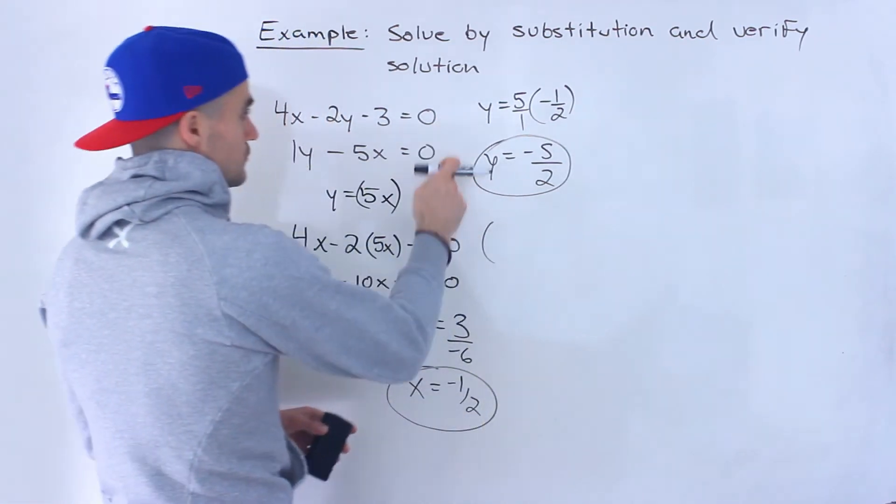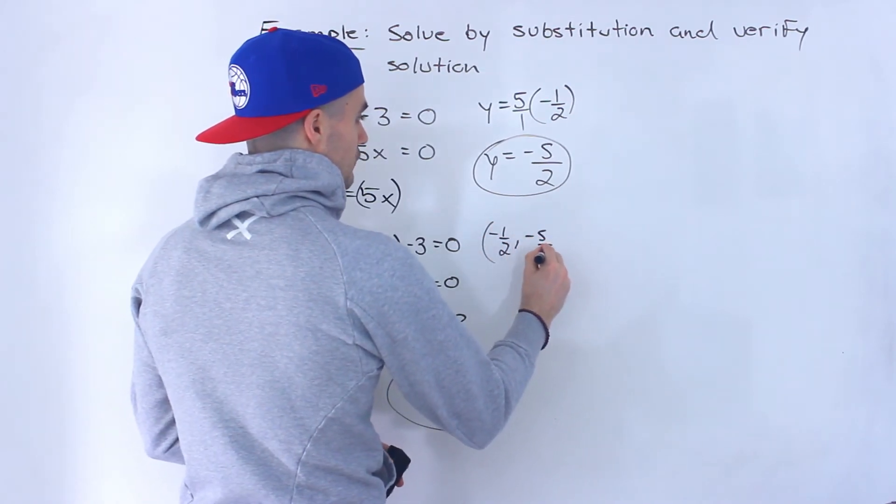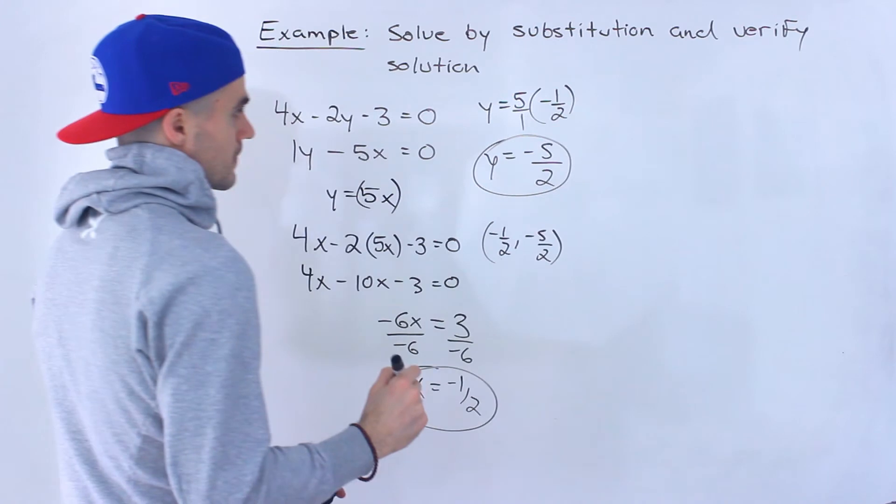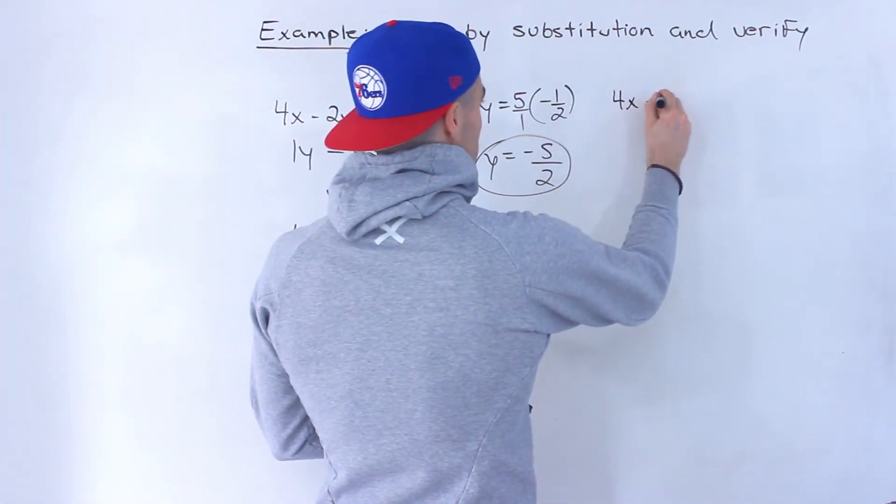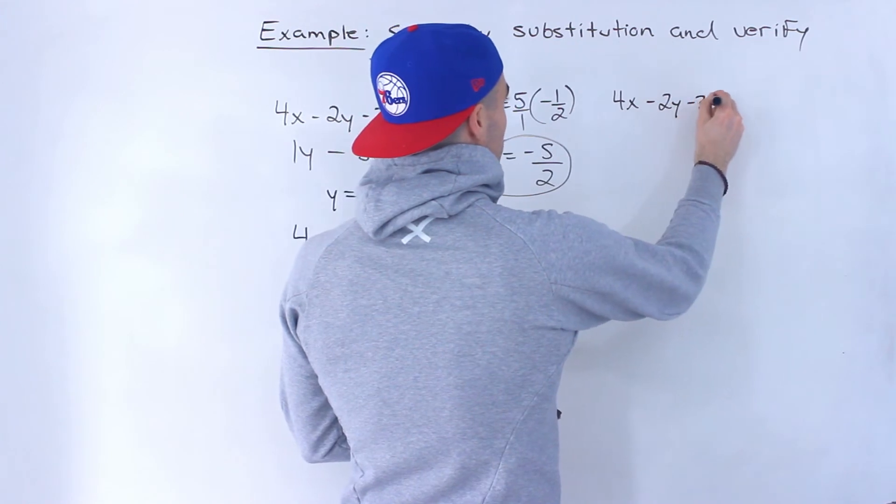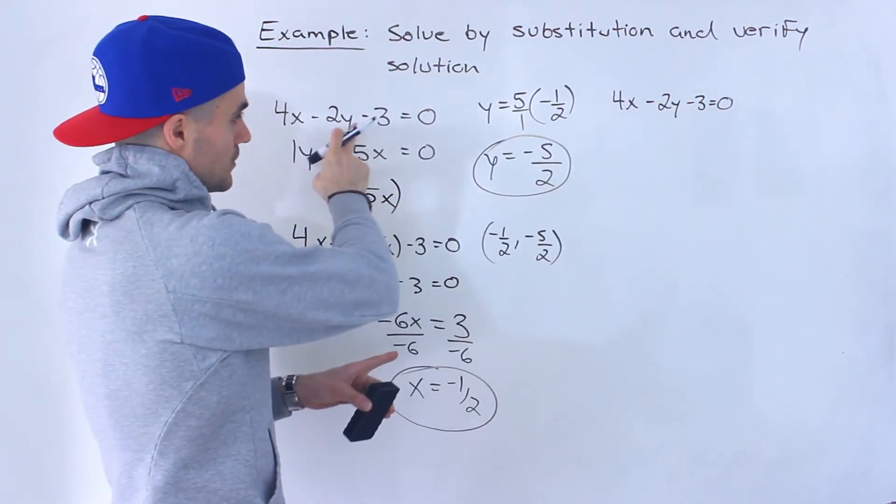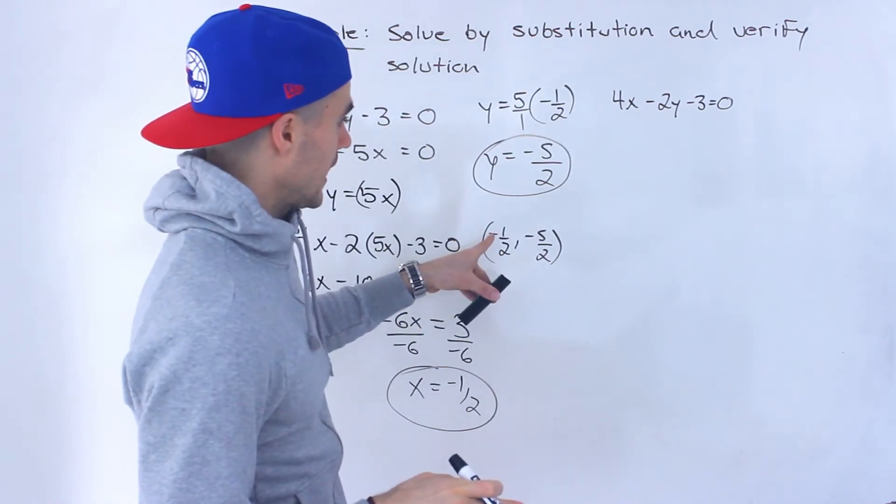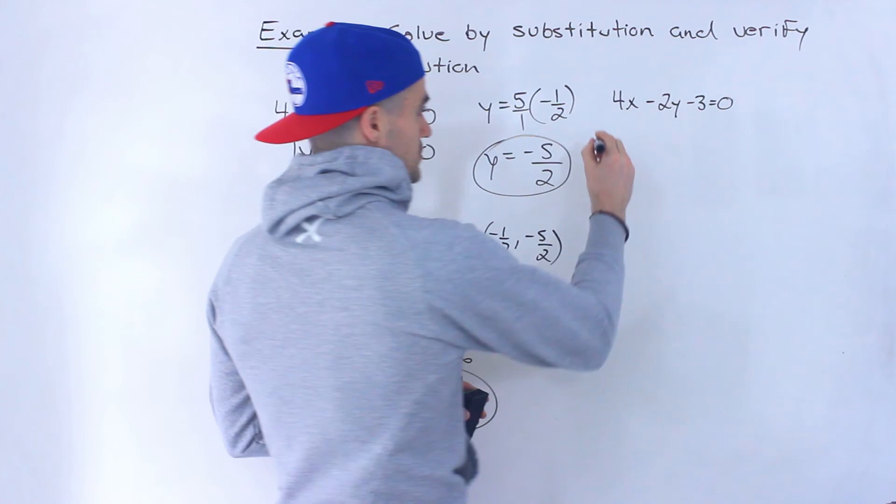So these two lines intersect at the point negative 1 over 2, negative 5 over 2. Now if you want to check it, you would rewrite these lines. Let's rewrite the first one, then plug in the x and y values and make sure both sides equal.